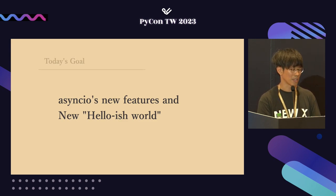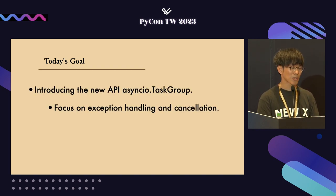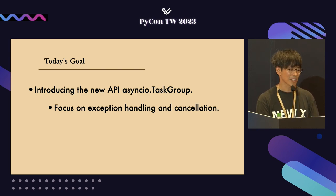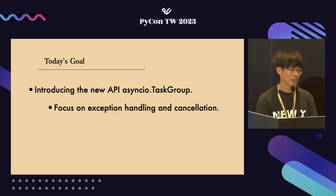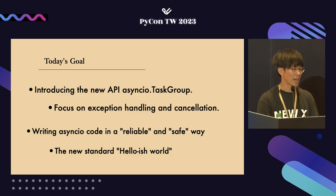Today I would like to introduce a new feature of asyncio — the new-ish world. This is our goal for this talk: introducing the Python 3.11 new API asyncio.TaskGroup, comparing and explaining the differences between Python 3.10 and Python 3.11, showing how we can write exception handling more easily, and explaining how cancellation works. I hope this talk will inspire you to give asyncio.TaskGroup a try, and guide you to a reliable and safe way of writing with it.